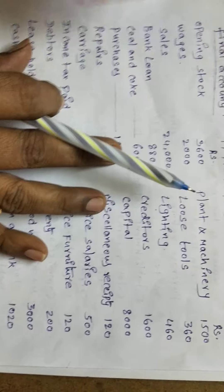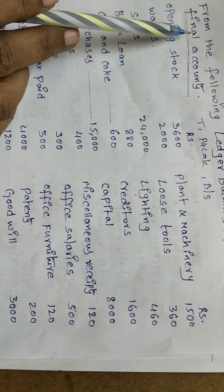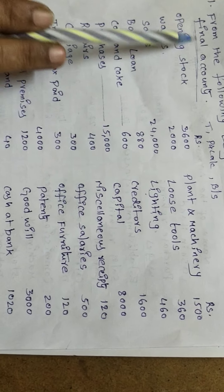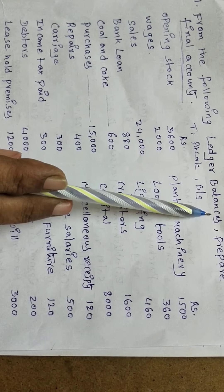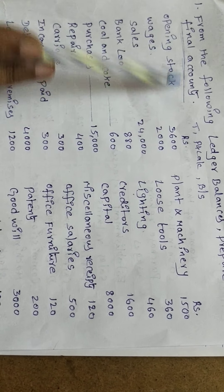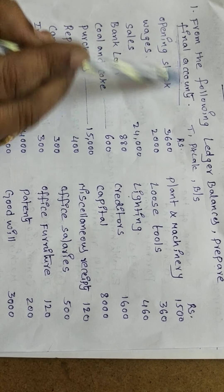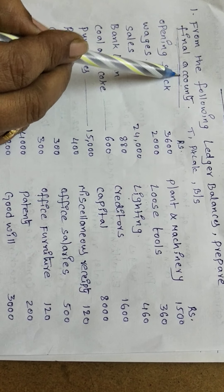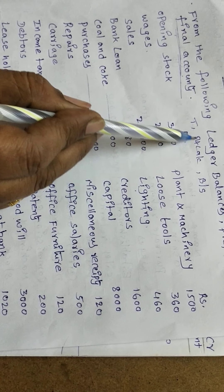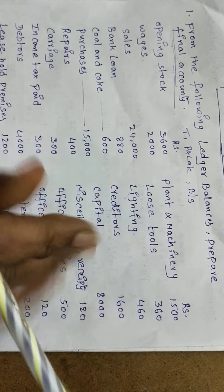Now here is the problem we are going to discuss. From the following ledger balances, prepare final accounts — meaning trading account, profit and loss account, and balance sheet.